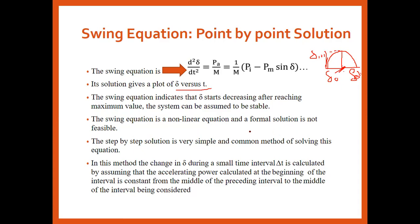In that case, the step-by-step procedure is a very simple and commonly used method for solving this equation. In this method, we solve the swing equation over small time intervals. Delta is calculated by assuming the accelerating power to be constant at the beginning of each interval, and the accelerating power is already calculated at the beginning of that interval.